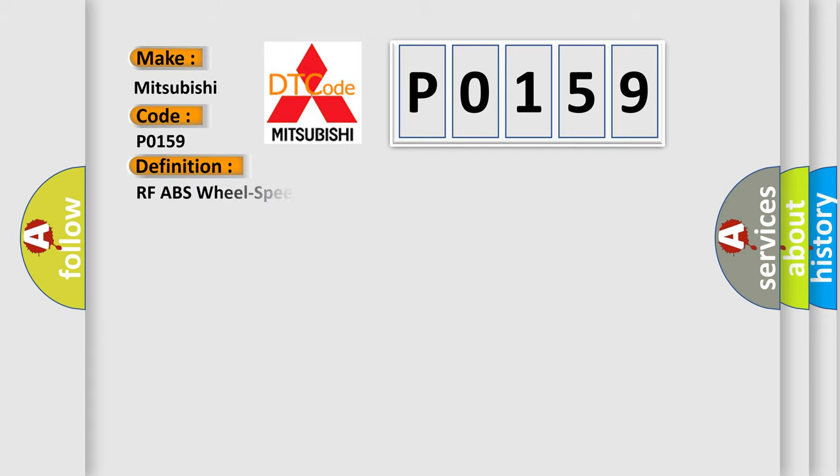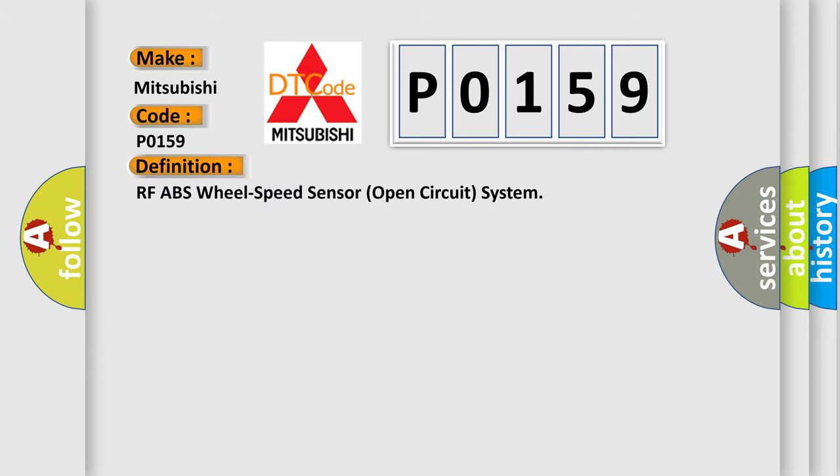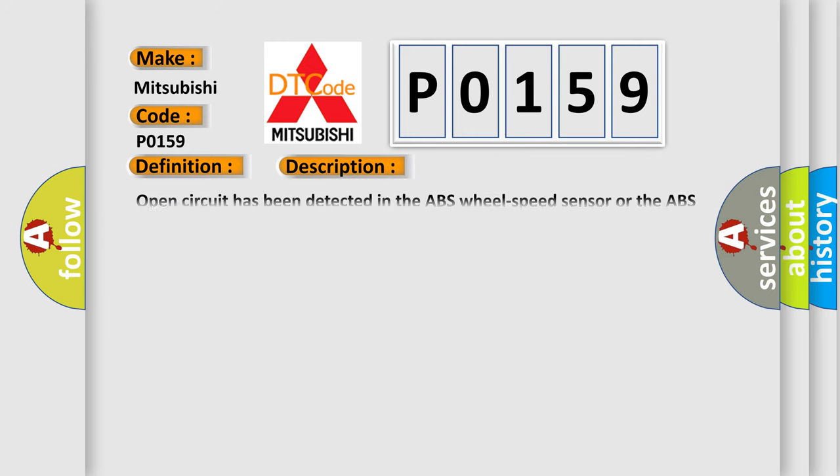The basic definition is: RFABS wheel speed sensor open circuit system. Open circuit has been detected in the ABS wheel speed sensor or the ABS wheel speed sensor wiring harness on any of the four vehicle wheels.